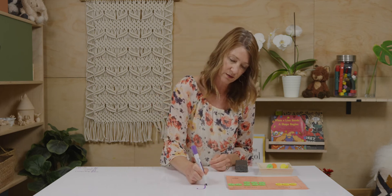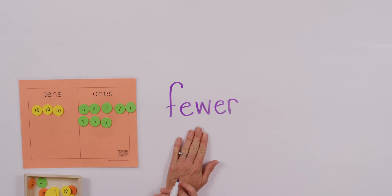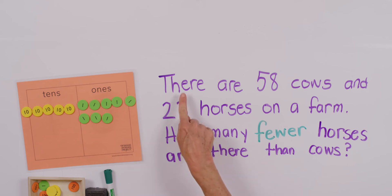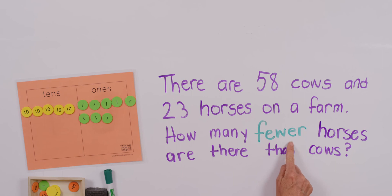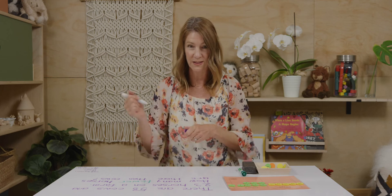The last one uses a word we may not have used together before: 'fewer.' When we're talking about fewer, another way to think about it is 'less than' — one of the number groupings will have less than the other. Let's read: There are 58 cows and 23 horses on a farm. How many fewer horses are there than cows? Let's think — are we talking part or whole? Let's make our number bond.